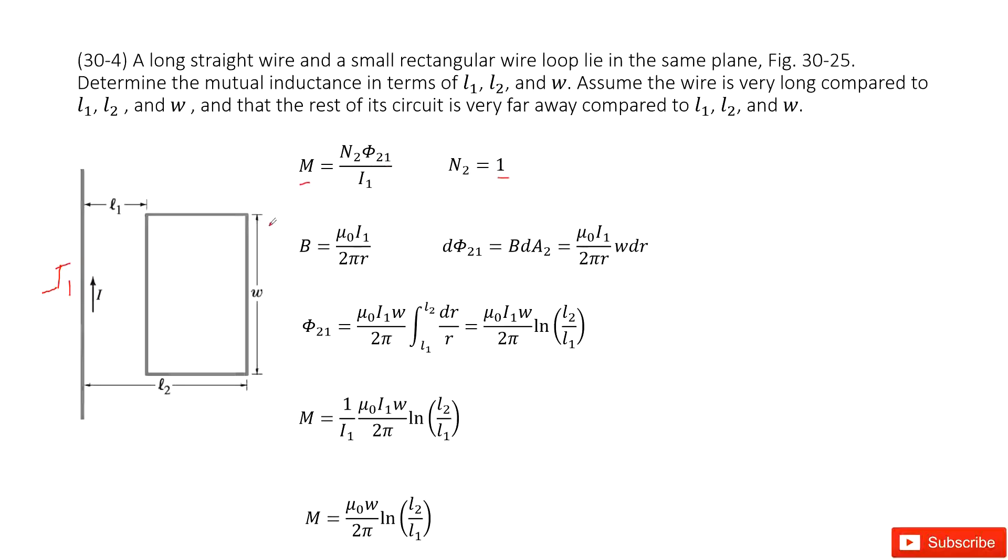And then we need to find magnetic flux in this loop, right? In this loop. First one, the B magnetic field. Where does it come from?